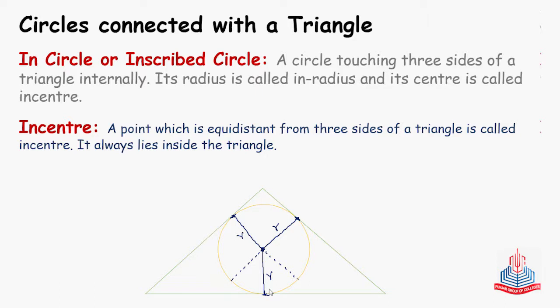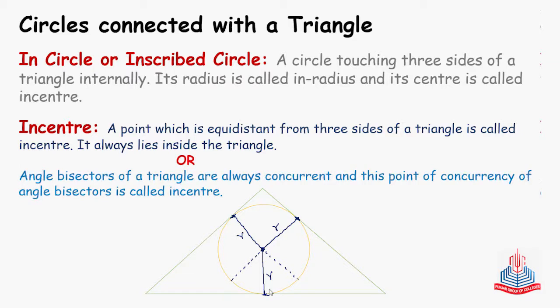The in-center always lies inside the triangle, because the circle is inside the triangle, so the center will also be inside the triangle. The in-center can also be defined another way: angle bisectors of a triangle are always concurrent, and this point of concurrency of angle bisectors is called in-center.